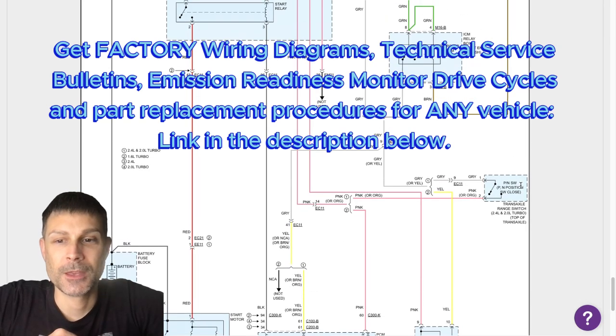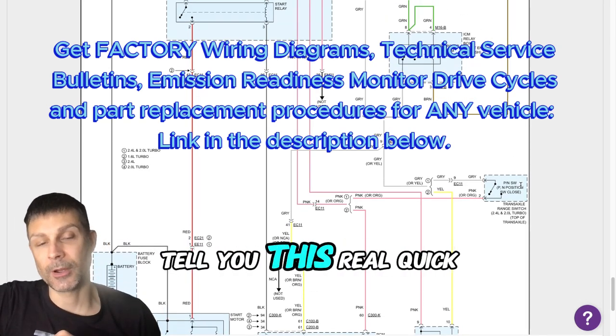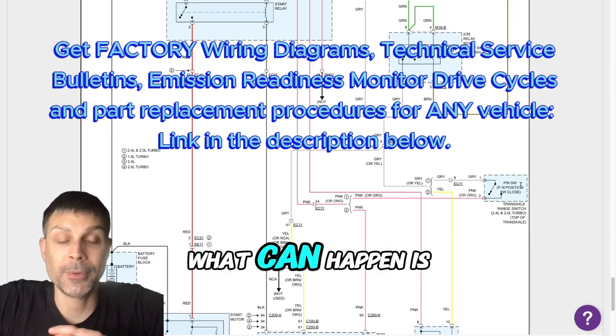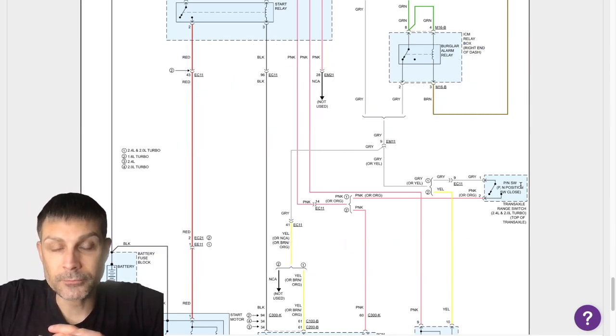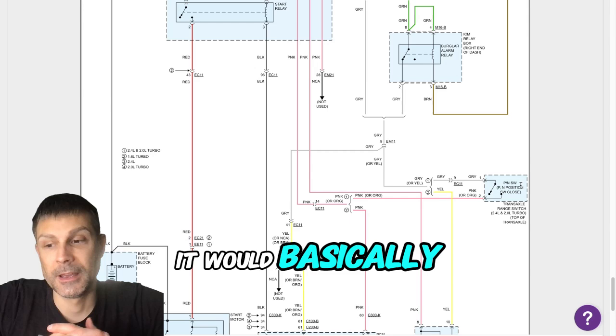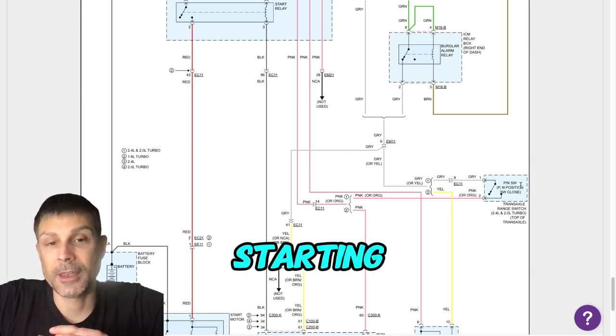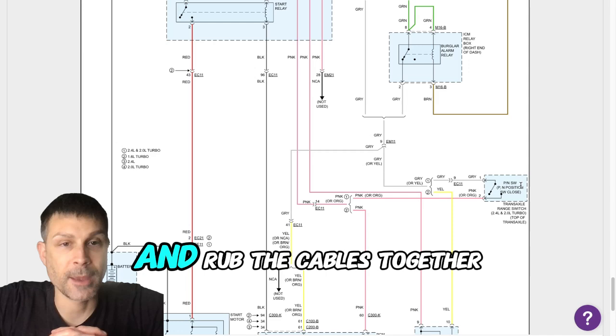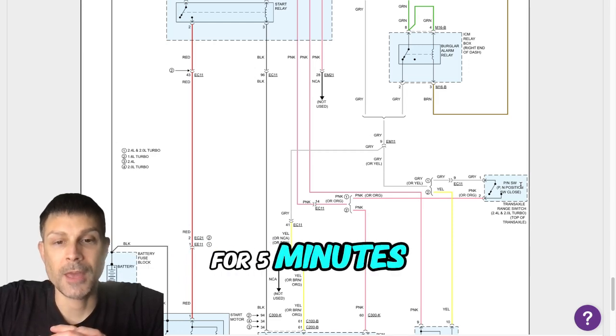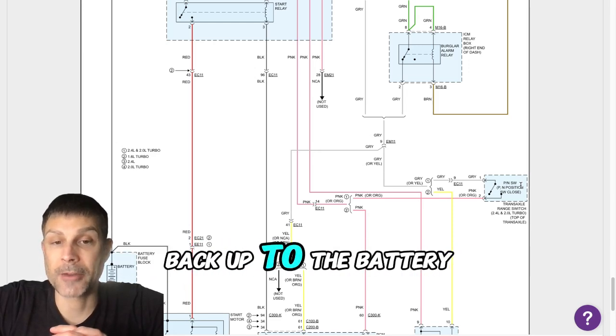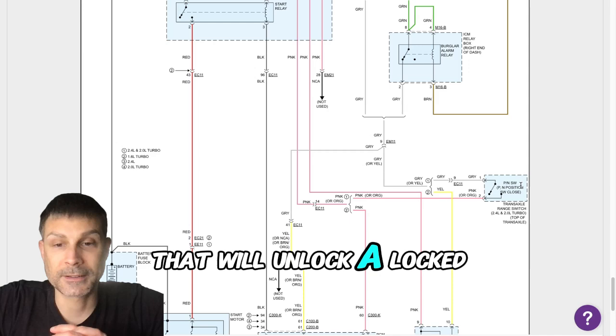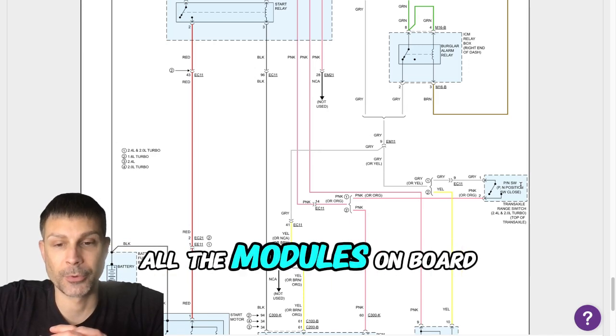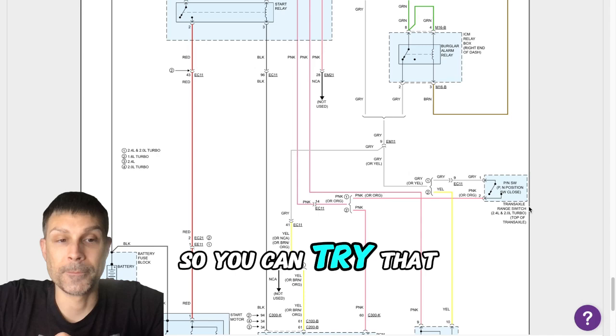Yeah. Now in some cases, let me tell you this real quick, some cases if one of these modules lock up, what it would do is it would basically prevent it from starting. And sometimes in some cases if you disconnect the battery cables from the battery and rub the cables together for five minutes, and then reconnect the cables back up to the battery, that will unlock a locked up module. What it does is it discharges all the capacitors inside all the modules on board the vehicle. So you could try that.